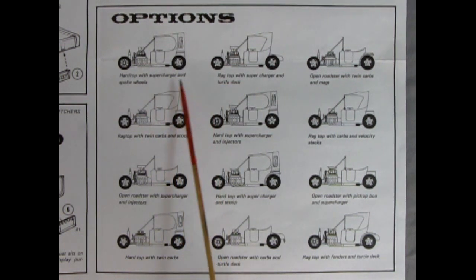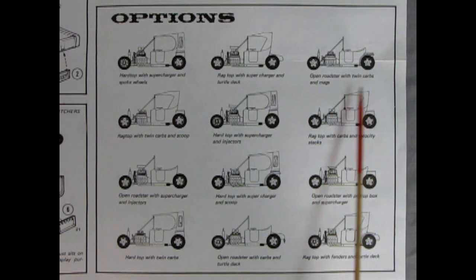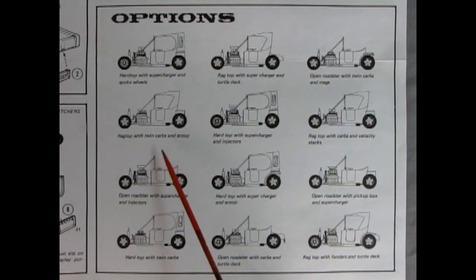And here we get all the different options that you can build with your switcher's car. Like this hardtop with supercharger and spoke wheels. Ragtop with supercharger and turtle deck. Open Roadster with twin carbs and mags. Ragtop with twin carbs and scoop. Hardtop with supercharger and injectors. Ragtop with carburetors and velocity stacks. Open Roadster with supercharger and injectors. Hardtop with supercharger and scoop. Open Roadster with pickup box and supercharger. Hardtop with twin cams. Open Roadster with carbs and turtle deck. And a ragtop with fenders and a turtle deck. Which one would you build? Have you built one of these in the past? If so, let us know in the comments down below.